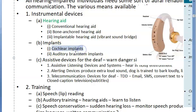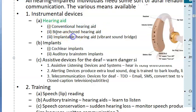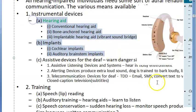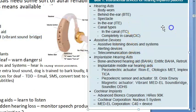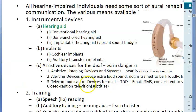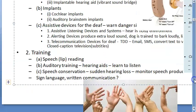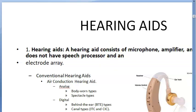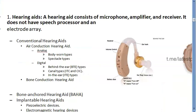With implants you implant something in the cochlea or in the brainstem. Do not confuse implantable hearing aids with implants — the Vibrant Sound Bridge is under implantable hearing aids, while cochlear and brainstem implants are separate. There is a slightly different classification in another textbook, but we will not go into that. Let's get started with hearing aids.